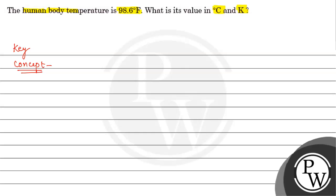If we have to convert degree Fahrenheit to degree Celsius, we have a formula: C = 5/9(F - 32).